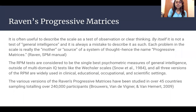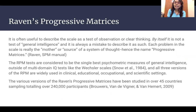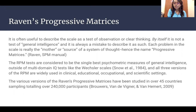The Raven's Progressive Matrices is often useful to describe a skill as a test of observation or clear thinking. It is not a test of general intelligence, and it is always a mistake to describe it as such. This IQ test does not measure general intelligence. You'll see later that it focuses on two specific abilities that it wants to measure.